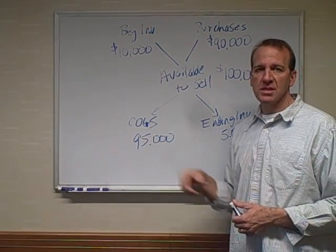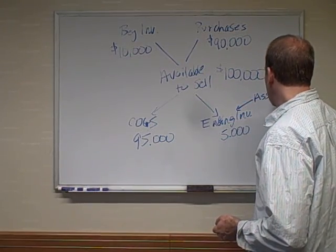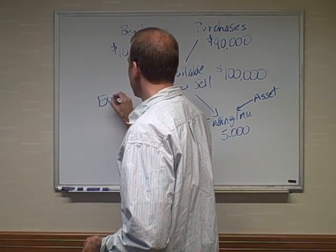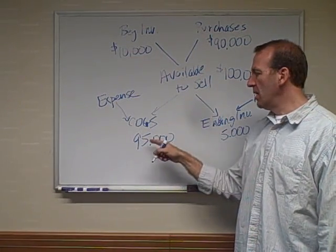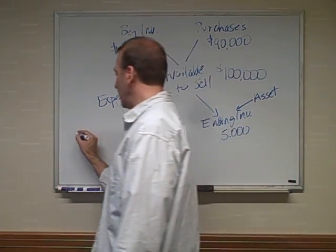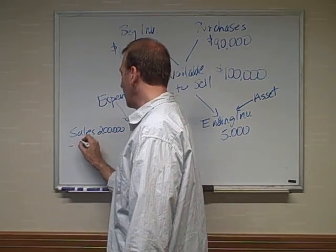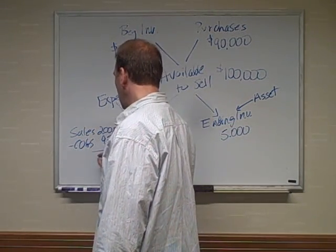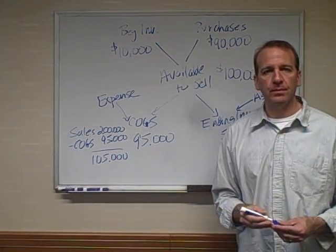Let's point out that ending inventory is an asset and cost of goods sold is an expense. When we sell the item, it becomes an expense. So if we sold these items for $200,000, then our sales would be $200,000 and the expense associated with it is the cost of goods sold of $95,000. So our profit would be $105,000.